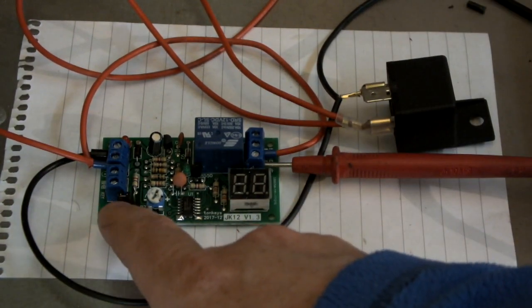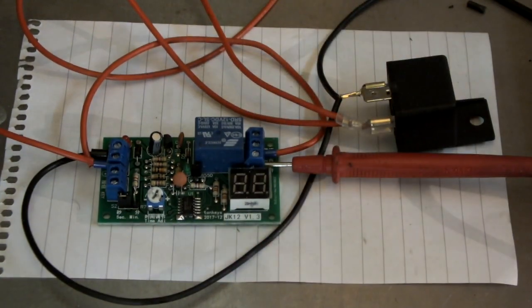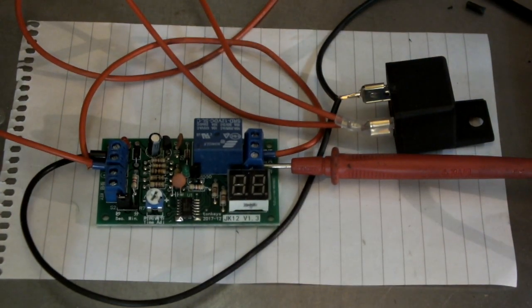So we've got the little jumper bar, centre bar to seconds. It doesn't make any difference, it could be on minutes, that's pretty much irrelevant. But for what we're doing, I want it in seconds. So I'm going to power the board up with this little power supply.